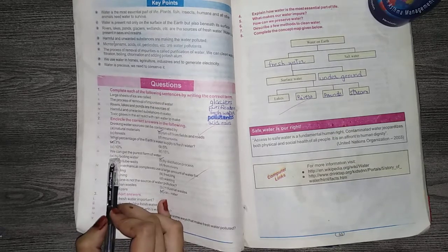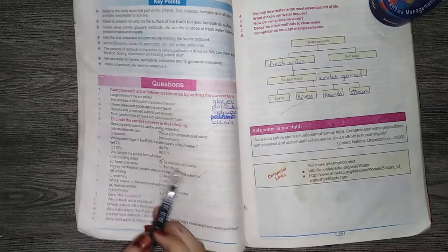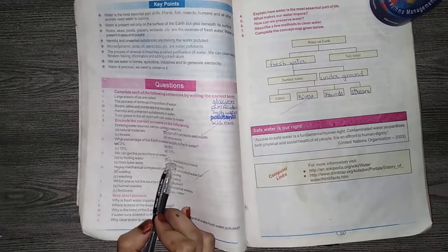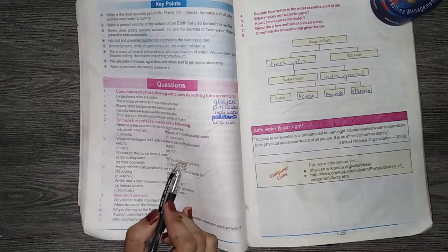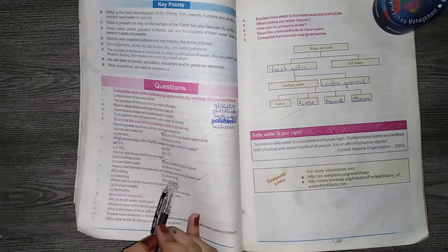Number 3, we can get a pure form of water: A, by boiling, B, by distillation, C, from wells, D, from rivers. So this answer is B, distillation process. Because I have explained in the lecture that in distillation process, bacteria and salts are removed.